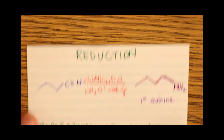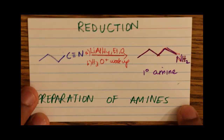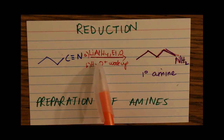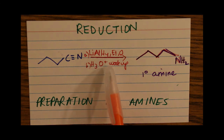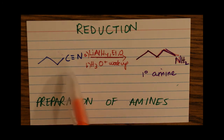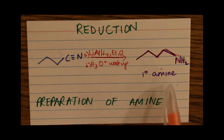Our last reduction reaction is not in the preparation of alcohols but in the preparation of a primary amine. We again use the very strong reducing agent lithium aluminum hydride, ethanol, and an acid workup. But this time we're acting on a nitrile group, and the nitrile group gets reduced to a primary amine. Remember, reduction is just the addition of hydrogens.